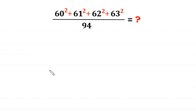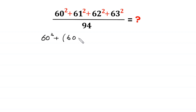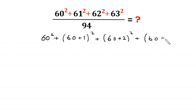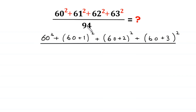Hello, welcome to how to solve this very nice algebra problem. We have 60 squared plus 61 squared plus 62 squared plus 63 squared, divided by 94. Let us start. 60 squared remains the same. 61 squared can be written as (60+1) squared, 62 squared as (60+2) squared, and 63 squared as (60+3) squared, all divided by 94.